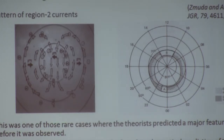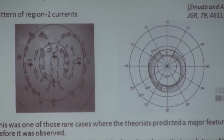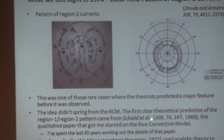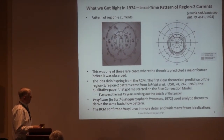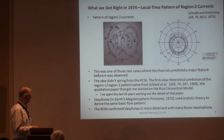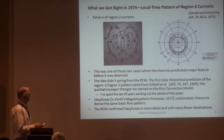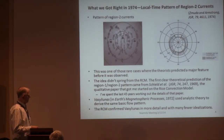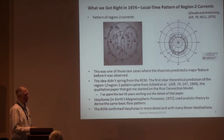The idea for this didn't come from the Rice Convection Model. The first clear theoretical prediction, as far as I can see, came from a paper by Shield, Freeman, and Dessler in 1969, and that was the qualitative paper that got me started on the Rice Convection Model — essentially I've spent the last 45 years working out the details of that. Then a couple of years later, Vasyliunas came out with an analytic theory that derived the same basic pattern. What the RCM did was to confirm the same things, but in a time-dependent form and with fewer idealizations than Vasyliunas had to make to make it analytic.